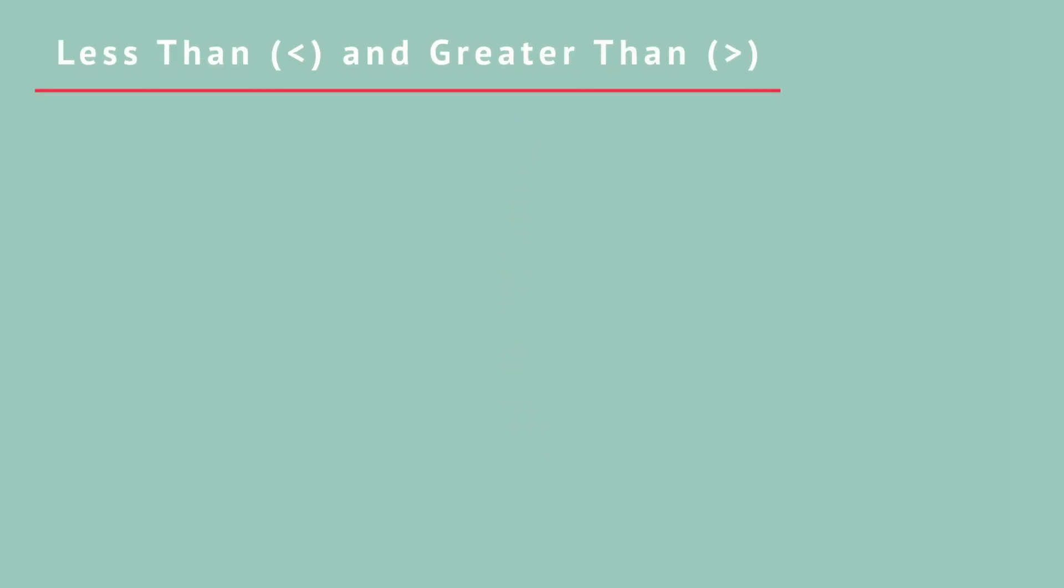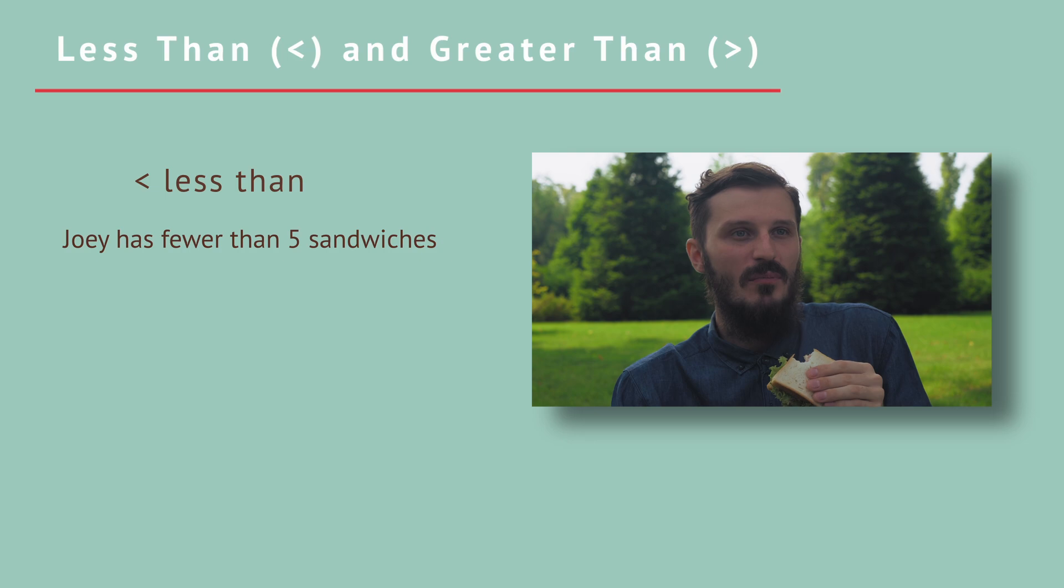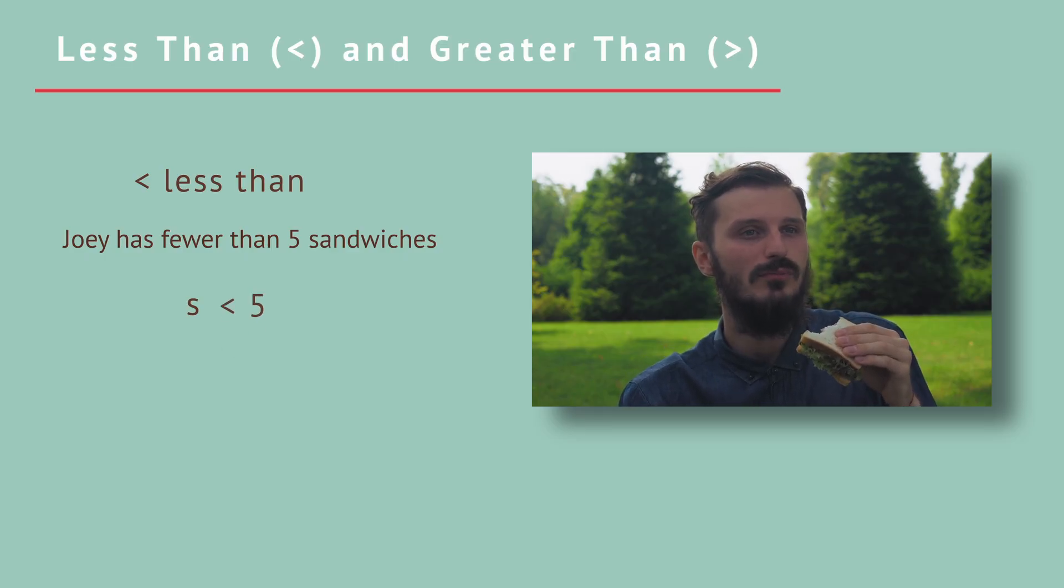Less than and greater than. Less than has its own special symbol. Less than means one thing is smaller than another. For example, Joey has fewer than five sandwiches. We don't know how many sandwiches Joey has, so we give it a variable name, s. We do know that the number of sandwiches is less than five, so we can write it as s is less than five.